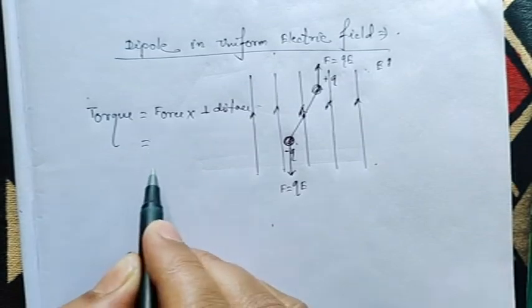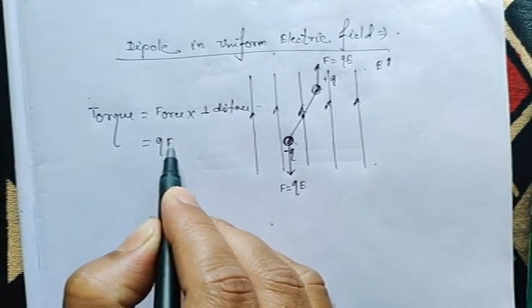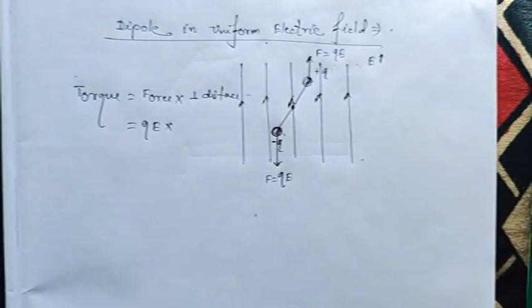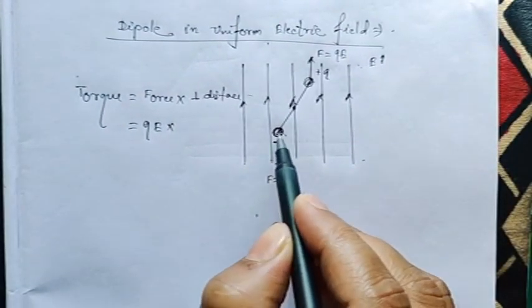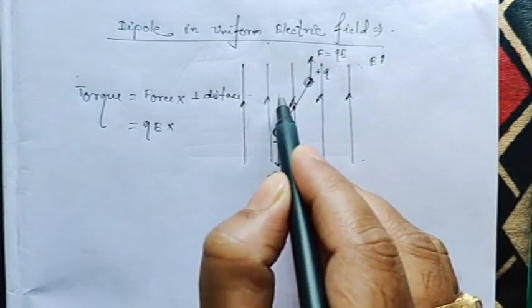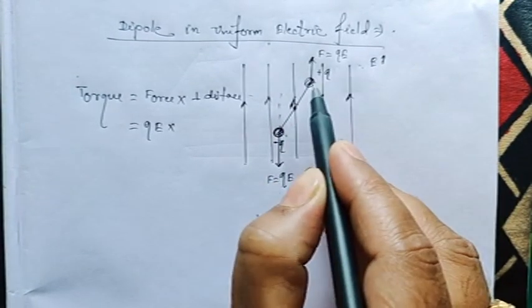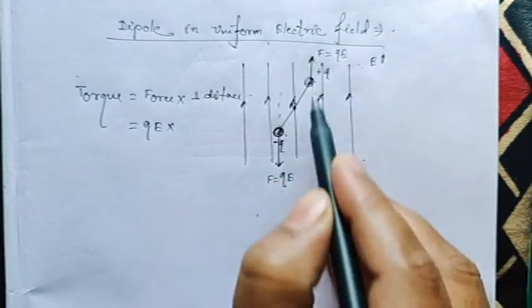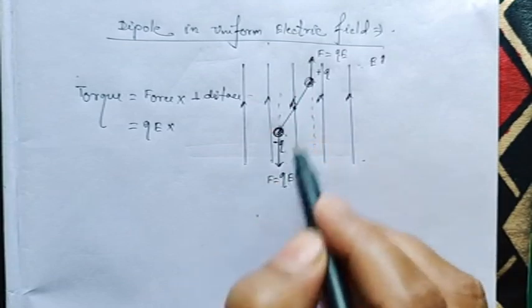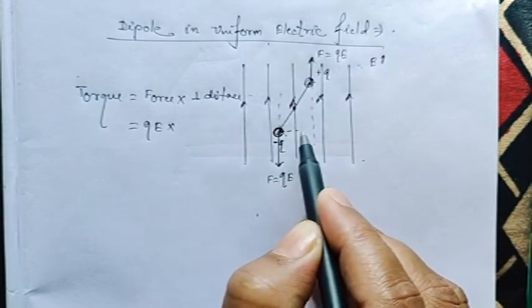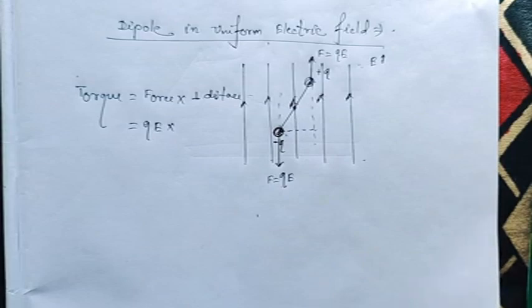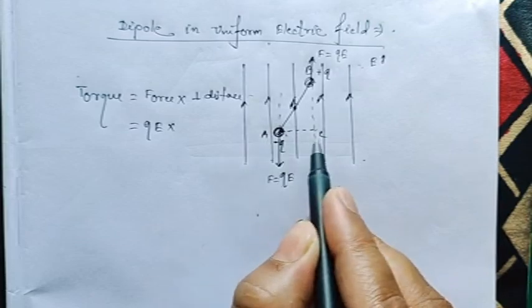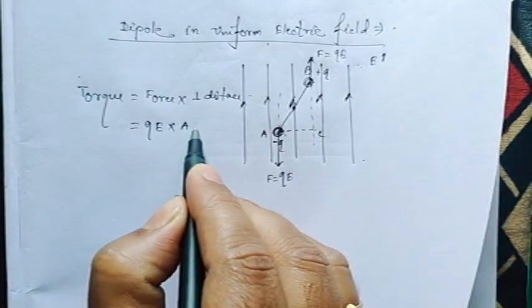Now, what about the force? You can consider any one of the forces: Q into E, into perpendicular distance. So let us find out the perpendicular distance. This force is acting along this direction and the other force is acting along this direction. So these two are the lines of force, and the perpendicular distance between these two is AC. If we give names A, B, C, then AC is the perpendicular distance.